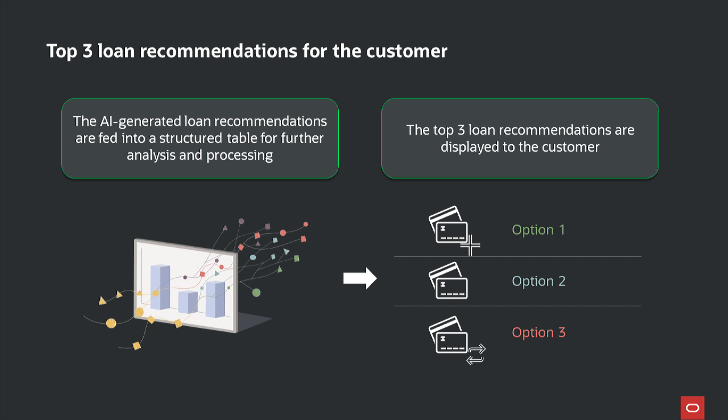Now we've got our model working — what's next? We take that output of loan recommendations and insert it into the table for further processing. We filter out the just-out-of-reach loans and then display the top three loan recommendations for the customer. We also include an explanation of why those loans were recommended, and just like that we're building an AI system that's connected to live data.